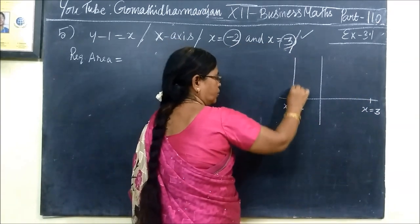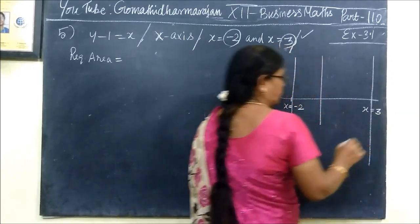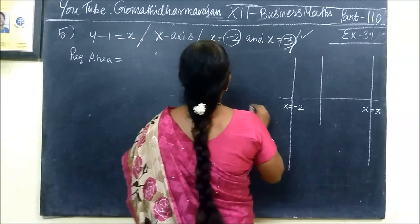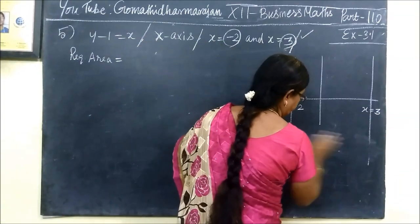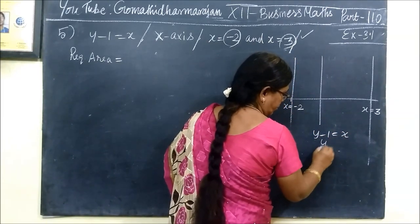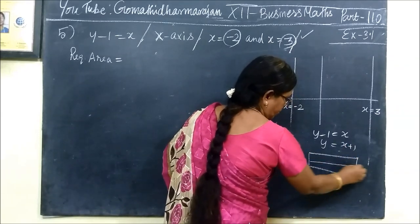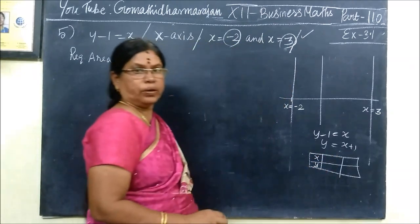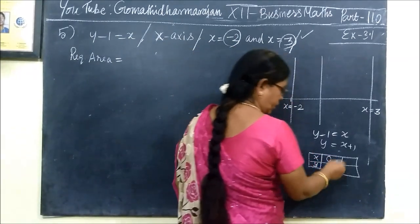x equals minus 2, x equals 3. So y equals minus 1 is equal to x. x plus 1, we will get the point. When x is 0, y is 1.